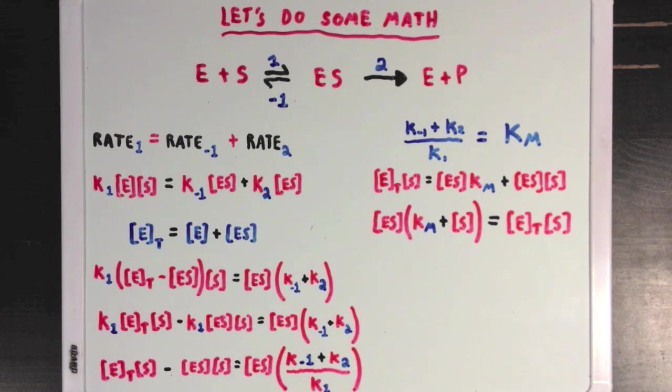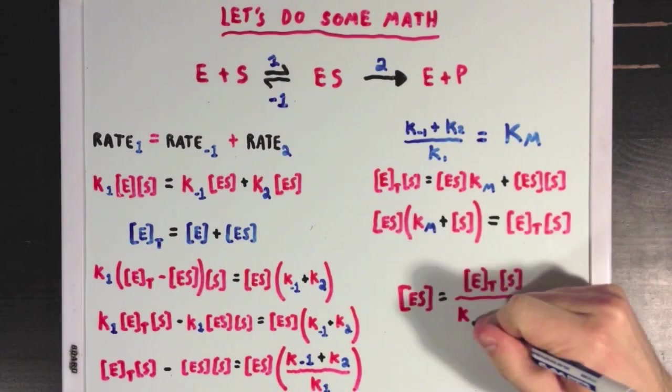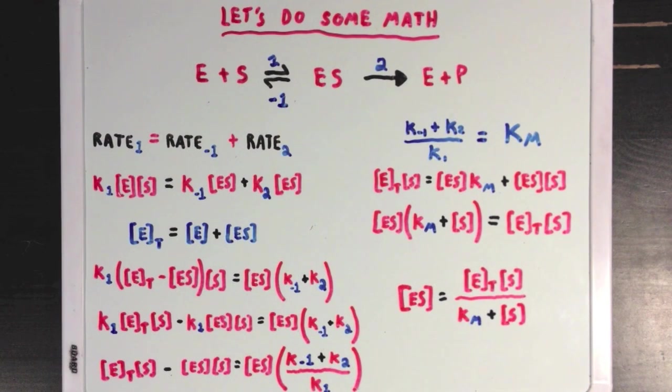And then what I'm going to do is I'm going to divide both sides of the equation by Km plus S. So I can move that term to the right side. So I'll make some more room over here.